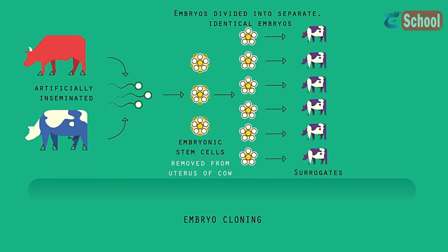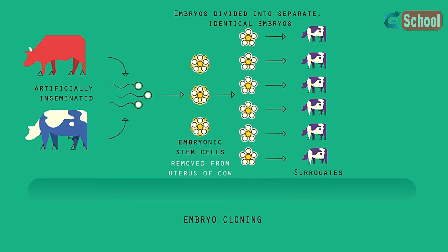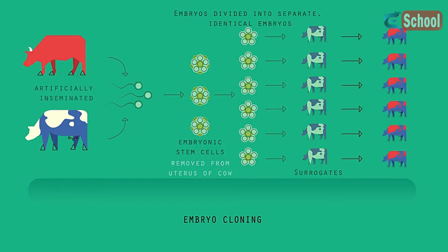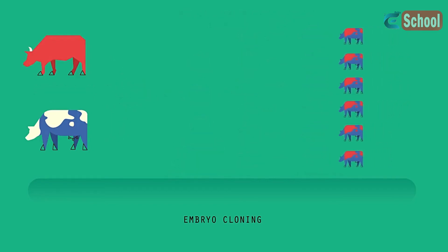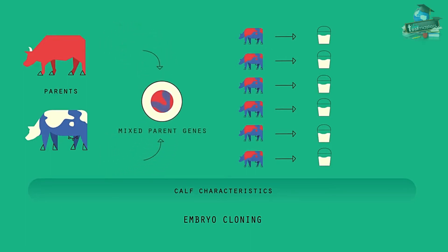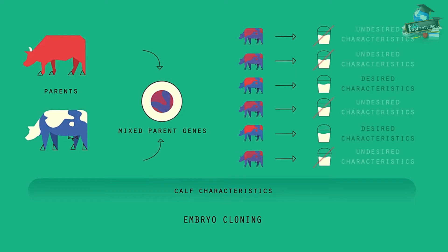These cows are surrogate cows — they are just being used to grow the embryos until they are born. The calves will be clones of each other, but not a clone of the mother, due to the bull's sperm. The calves will hopefully have the characteristics that the farmer desires, but as sexual reproduction is involved and the genes from both parents are randomly mixed, there is always the chance that they won't.